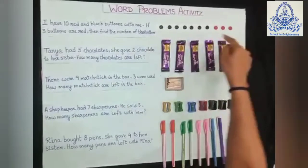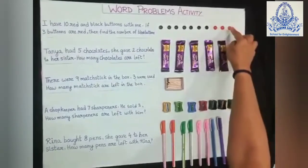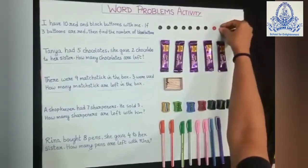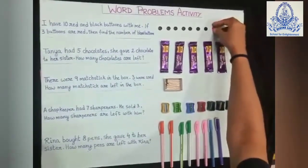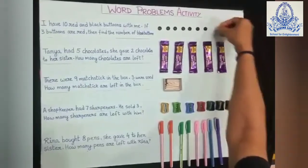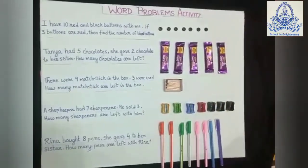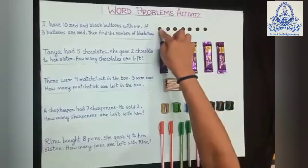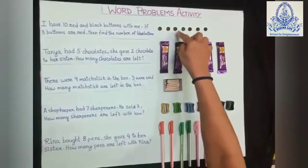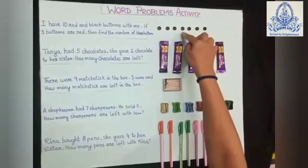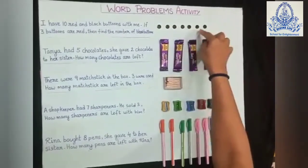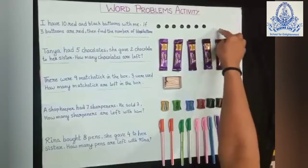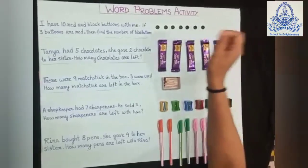So here are 3 red buttons. If I take away these 3 red buttons, how many black buttons are there? Counting: 1, 2, 3, 4, 5, 6, 7. So the answer will be 7.